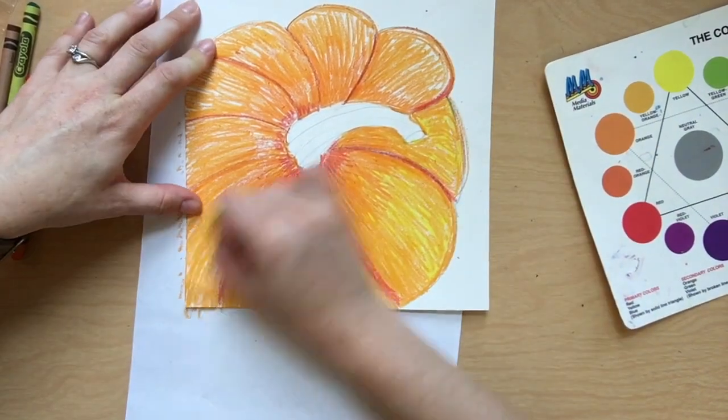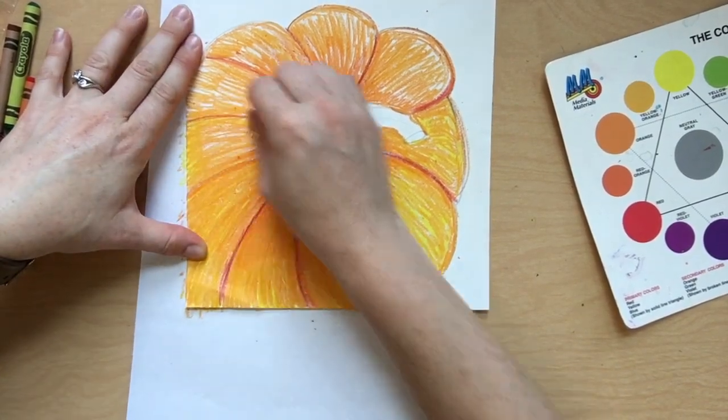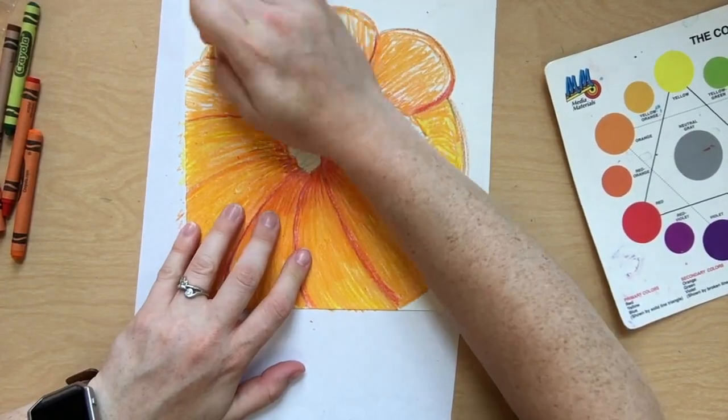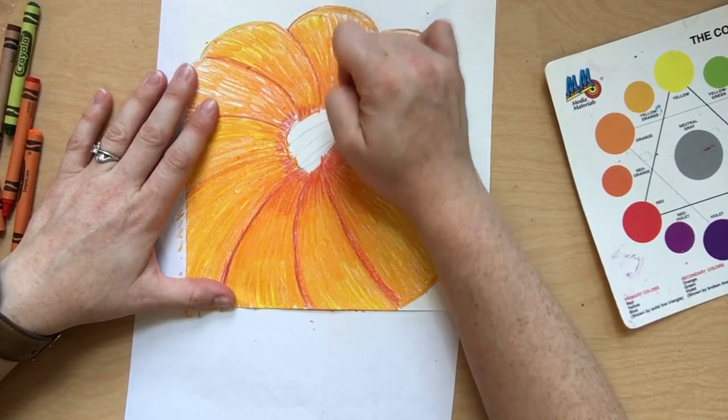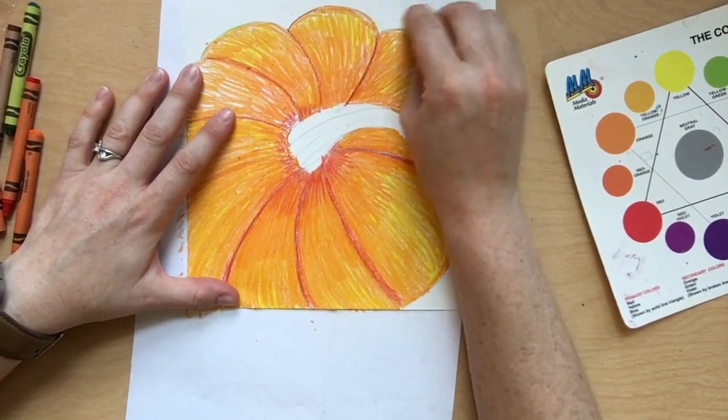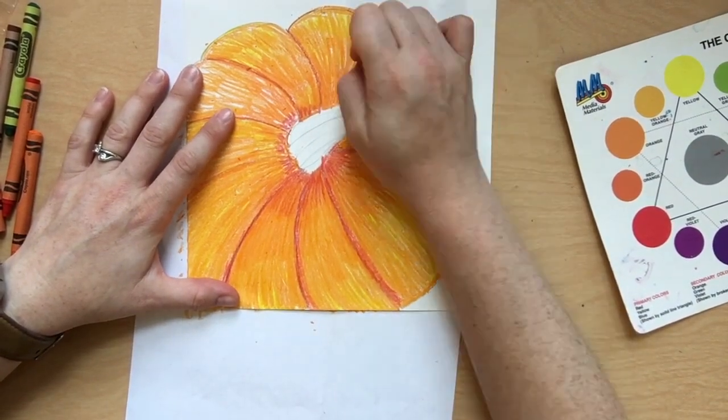And as you're working, you'll notice that the pumpkin has a glow to it. It's looking very realistic. And where the yellow's filled in, that's where the sunlight is hitting it, illuminating your pumpkin.